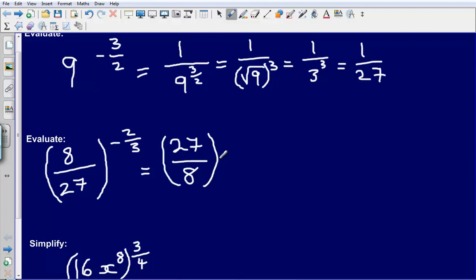And when we do that, it becomes a positive power. So now we have 27 over 8 to the power of 2 thirds. I could say that this is exactly the same as 27 to the 2 thirds over 8 to the 2 thirds.